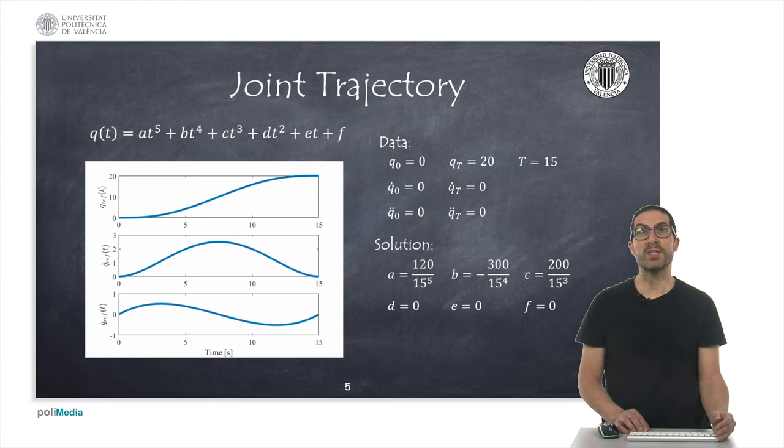Here, I show an example of a joint trajectory that has been generated considering that the value at the beginning of the trajectory must be zero, and the value at the end of it must be 20 degrees after 15 seconds. Both the initial and the final velocities, and also the accelerations, are forced to zero.